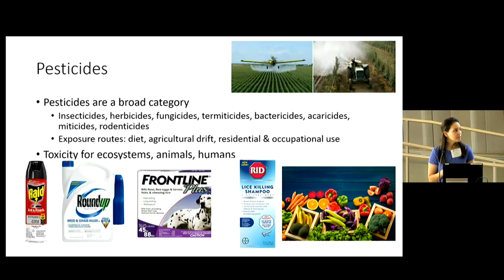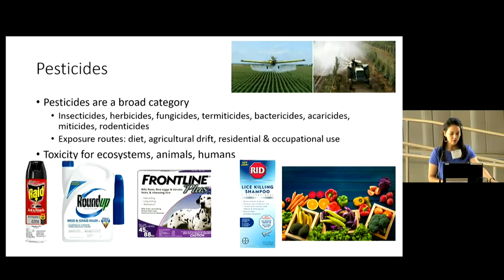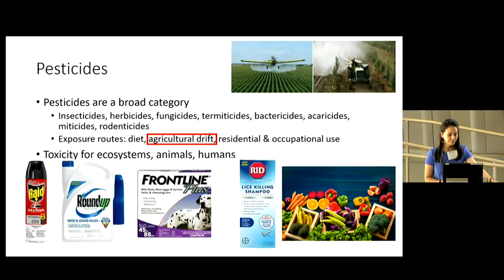As humans, we can be exposed through a few different routes. Most of the population is chronically exposed through our diet. We are also exposed through agricultural drift and residential and occupational use. Today, I'm going to be talking mostly about agricultural drift. Pesticides also display toxicity for ecosystems, animals, and for humans.